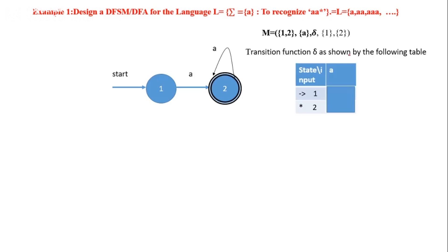Now I will show the transition table. All rows indicate states and columns indicate input. The start state is represented with an arrow and the accepting state is represented with a star. State 1 on input 'a' goes to state 2; state 2 on input 'a' also goes to state 2, as shown in the table.